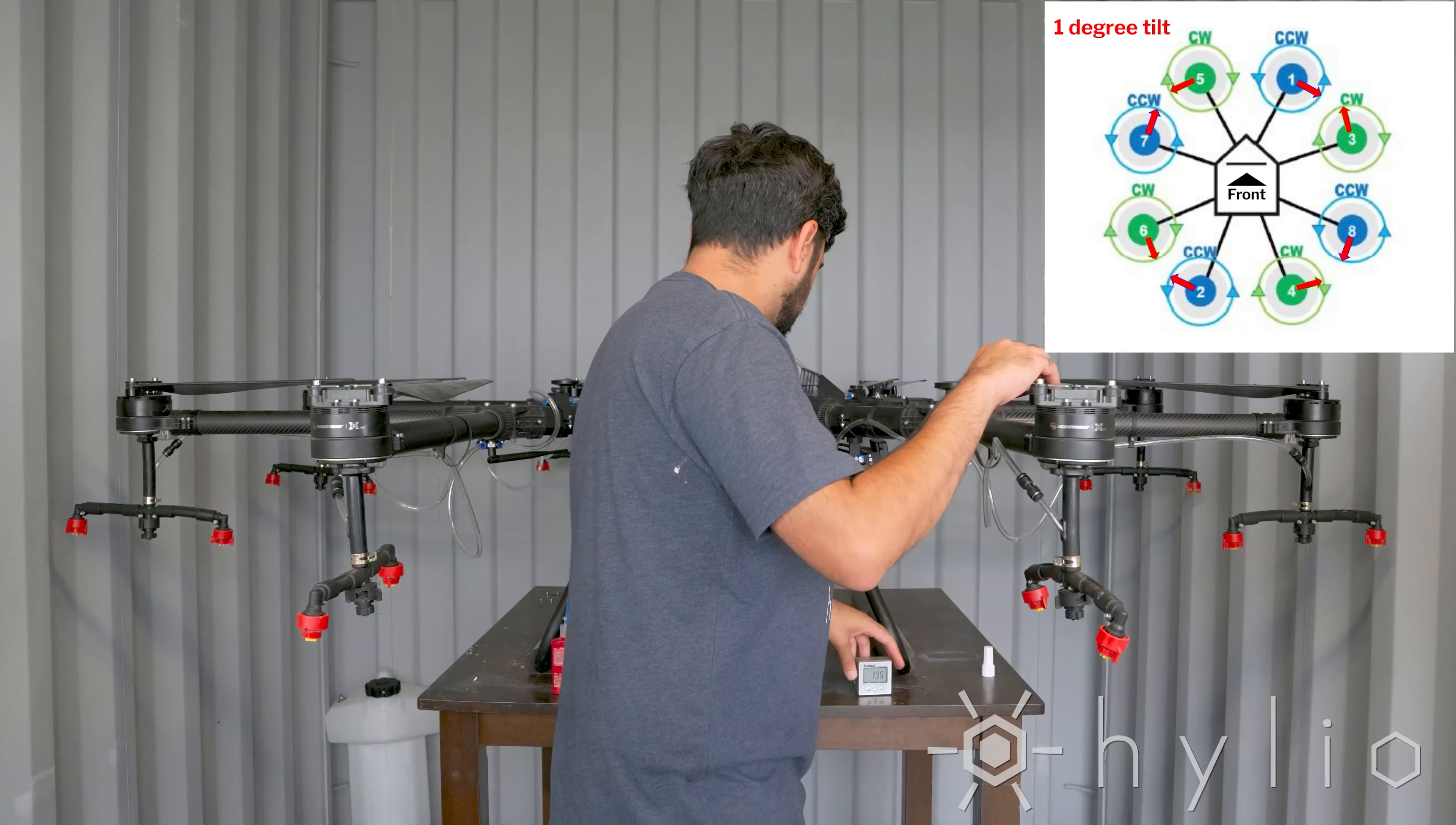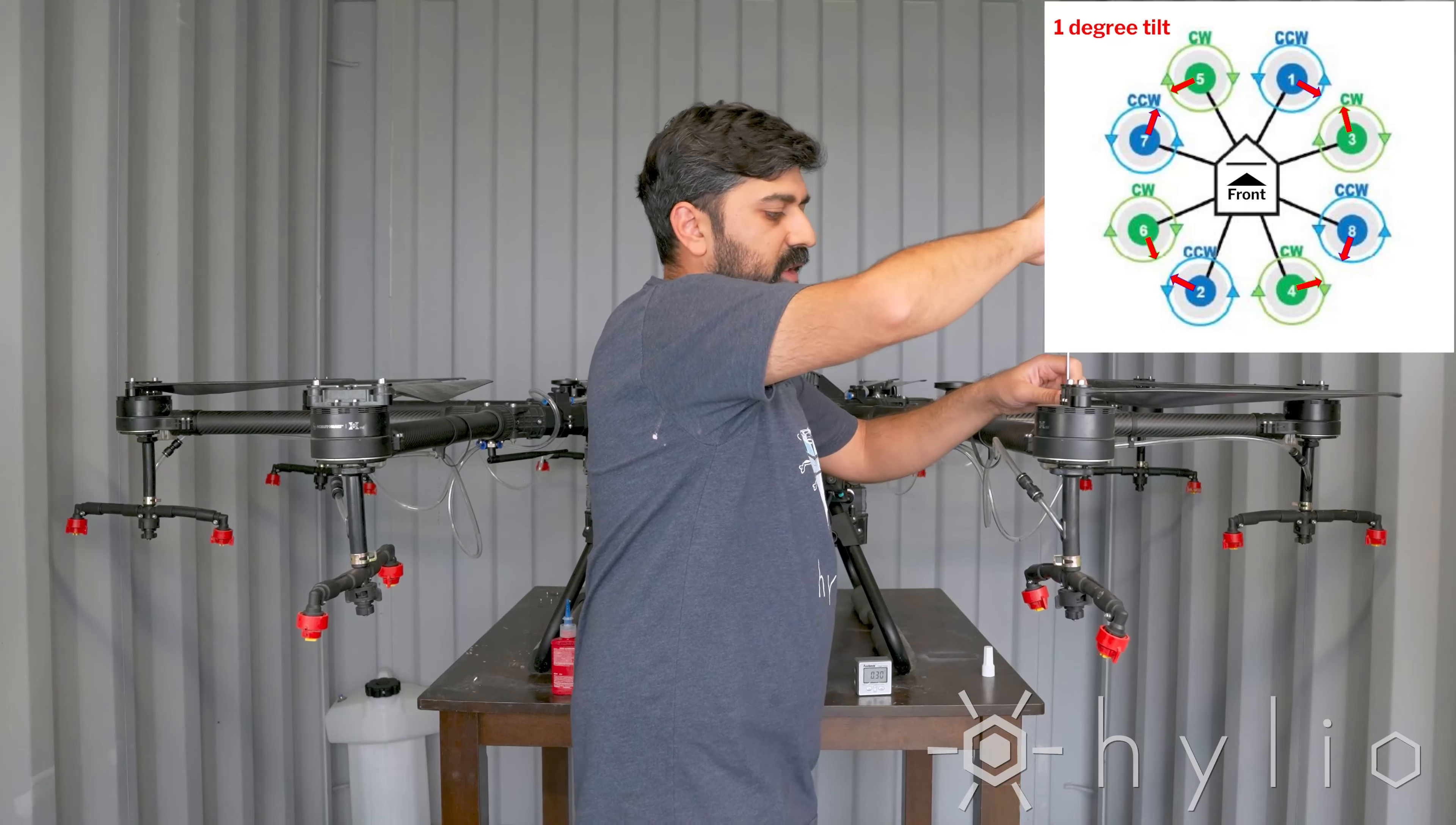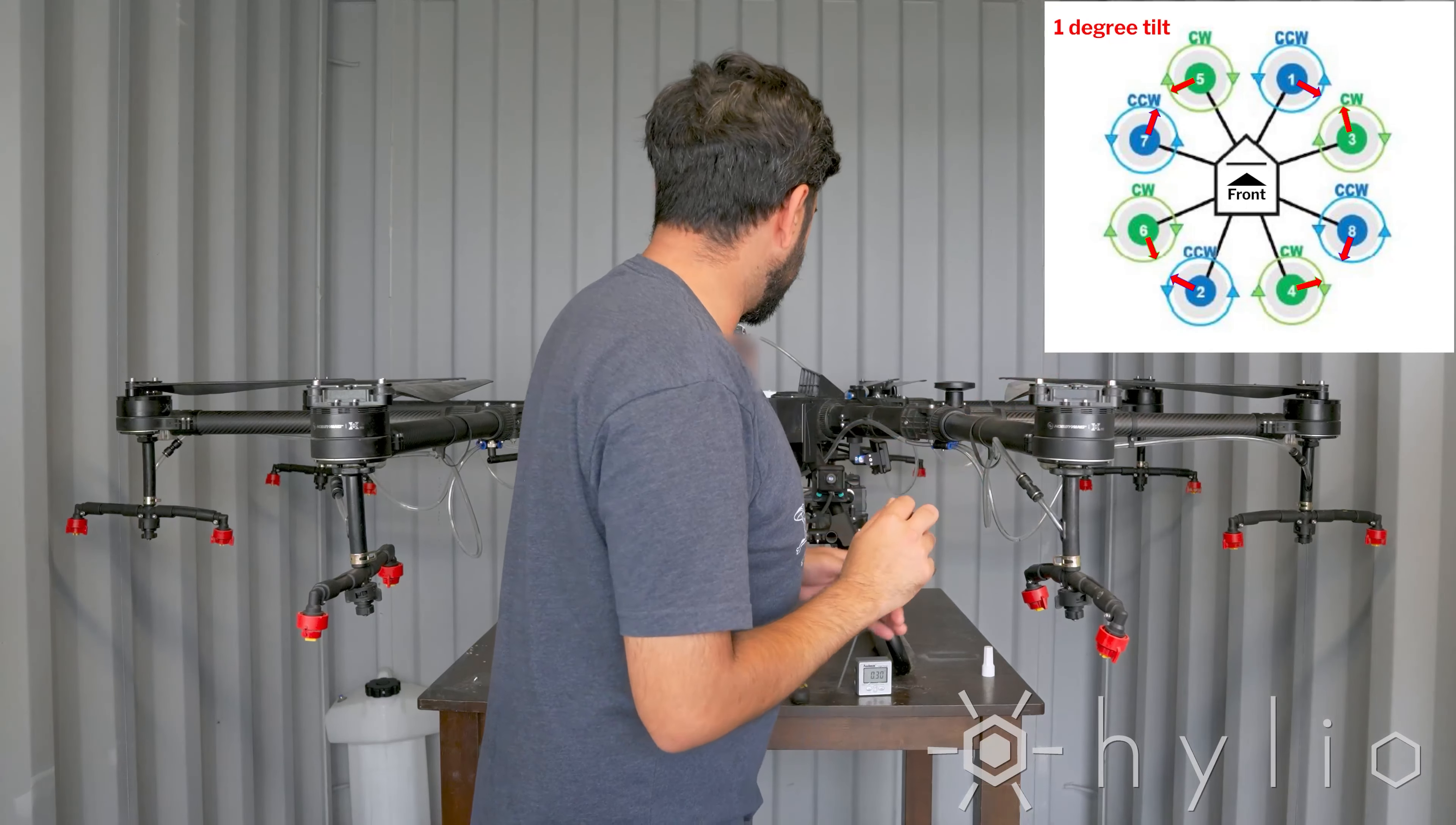Go ahead and tighten these screws. Once they are hand tightened, you can remove them one at a time to apply blue loctite, and then repeat the same steps. Torque them to four degrees.